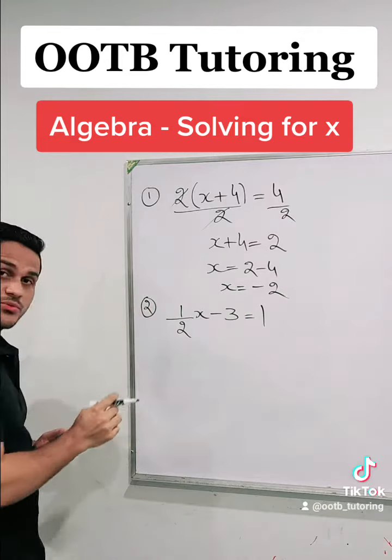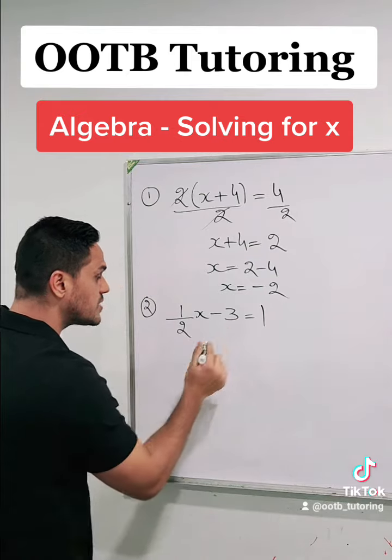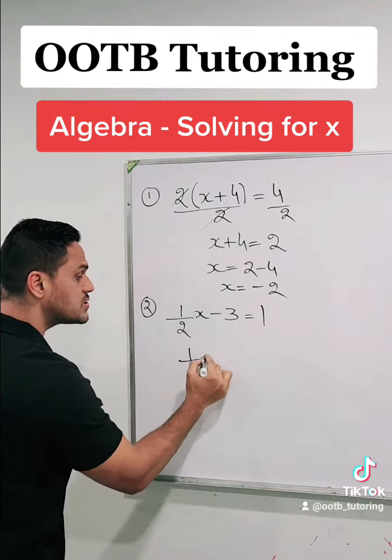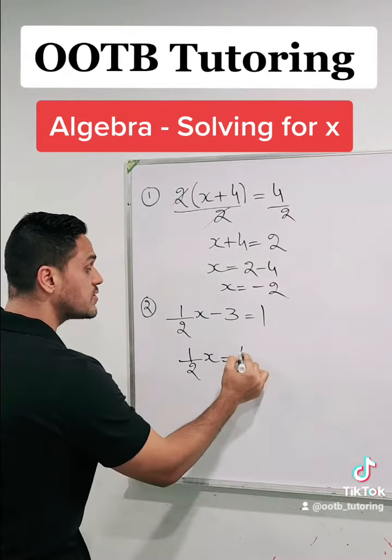Now in the next question, we have (1/2)x - 3 = 1. We'll first move the -3 to the other side, so we'll end up with (1/2)x = 1 + 3, which is equal to 4.